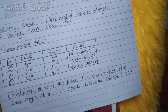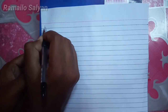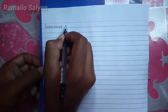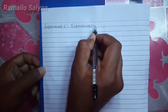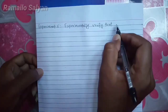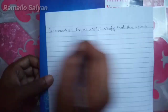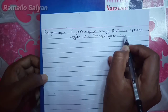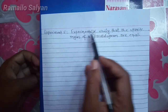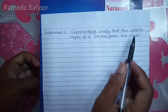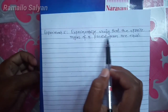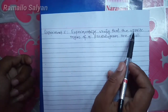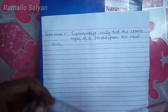We have finished our experiment. Now we are going to learn experiment number five, which is: the opposite angles of a parallelogram are equal. To experimentally verify that the opposite angles of a parallelogram are equal — a parallelogram is given and we have to verify that opposite angles are equal.